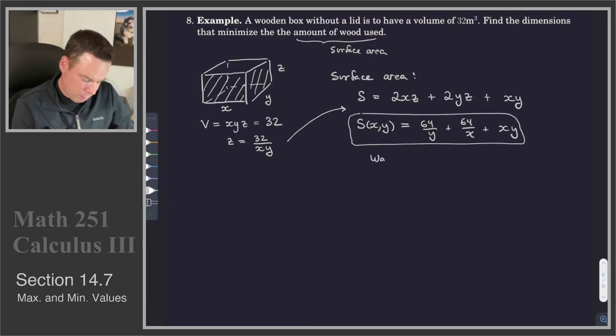And we want to find the minimum of this, so we want to minimize S. For what values of x? Well, we're interested in x being a width of the box, y being the depth or length of the box. So x and y both have to be positive values. So the only condition is that x and y have to be bigger than zero.